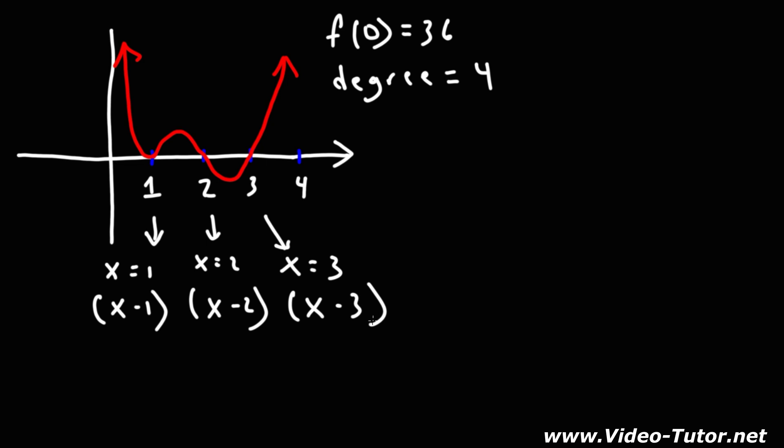Now we need to pay attention to the multiplicity of each zero. If we focus on the graph, notice that at x equals 1, the curve touches the x-axis. But at x equals 2, it crosses over the x-axis. When it crosses over, the multiplicity is odd, typically 1, if not 3. When it touches the x-axis but doesn't cross over, the multiplicity will be even, most likely 2.